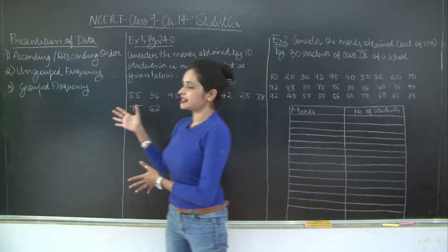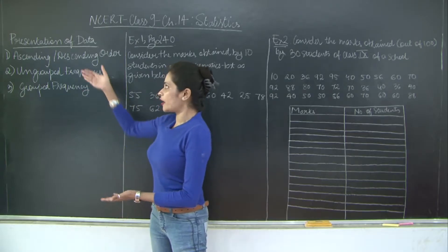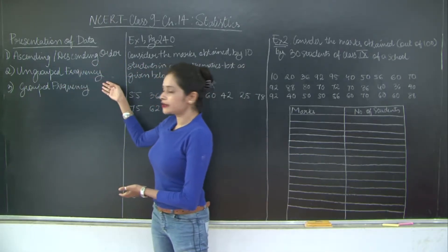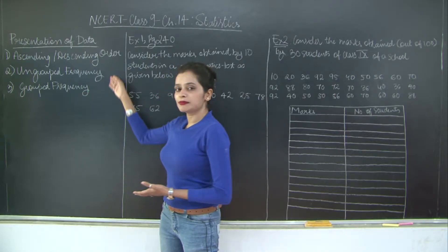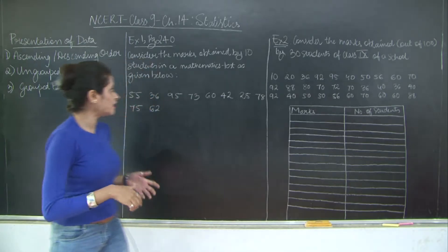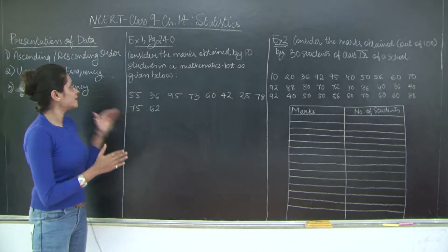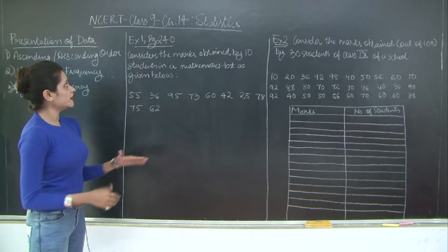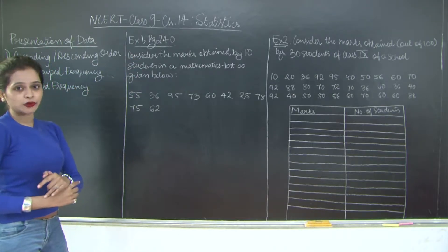You may present your data in different ways. One of the ways could be ascending or descending order, ungrouped frequency or group frequency. These will be in the form of table, so we use a tabular format. Now to explain this, the first section that is ascending descending, I have an example extracted from page 240 of the textbook, example number 1.